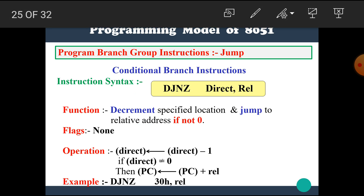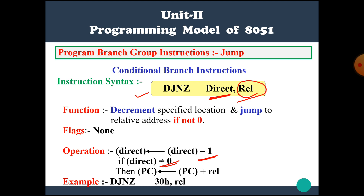The next addressing mode is DJNZ direct, relative, using direct addressing mode. The direct memory location has some data. This data is decremented by one, and if this data is not equal to 0, then jump to this relative address. Otherwise, normal operation proceeds.